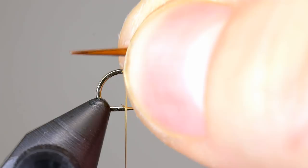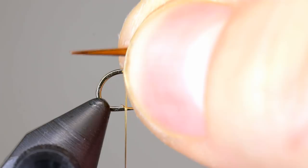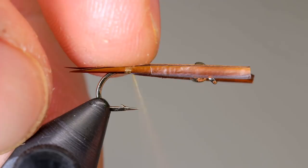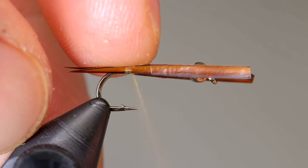Once the biots are even in length, measure about one half of the shank and tie them in where you left your thread. Be sure to hold the biots so that one lays on either side of the hook. Take a couple of wraps to hold the biots in place, then pinch them together to make sure the tips are still aligned.